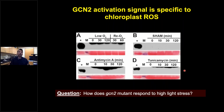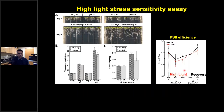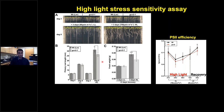We then asked how the gcn2 null mutant responds physiologically to high-light stress. In a high-light sensitivity assay, wild-type and gcn2 mutant seedlings grown for three days were transferred to either control light (80 µE) or high light (800 µE) for three days. After high-light treatment, gcn2 mutant seedlings show shorter roots compared to wild type, indicating a significant phenotypic difference.